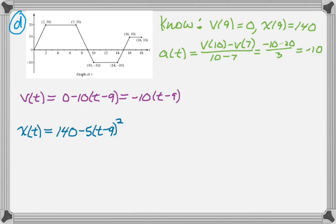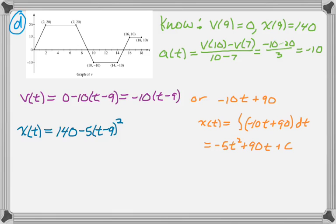But there's an alternative way of doing it that I think more of you probably would have thought to do. So, we can rewrite V of T as negative 10T plus 90, and then we know that X of T is going to be the integral of V of T. So, we'll integrate that, plus 1 times the reciprocal, and then plus C.